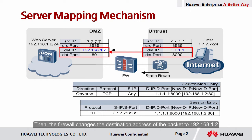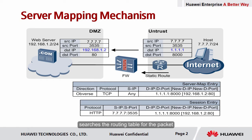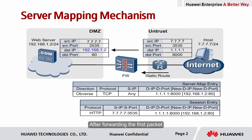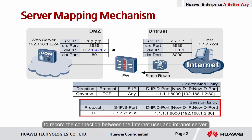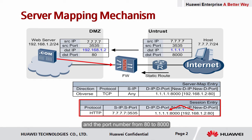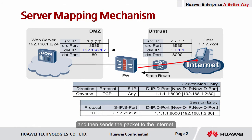The firewall changes the destination address of the packet to 192.168.1.2 and the destination port number to 80. The firewall then matches the packet with security policies, searches the routing table, and finally forwards the packet to the server in the private network. After forwarding the first packet, the firewall creates a session entry to record the connection between the internet user and the internet server. After the reply packet from the server arrives at the firewall, the firewall translates the source address from 192.168.1.2 to 1.1.1.1 and the port number from 80 to 8000, based on the address and port mapping recorded in the session entry, and then sends the packet to the internet.